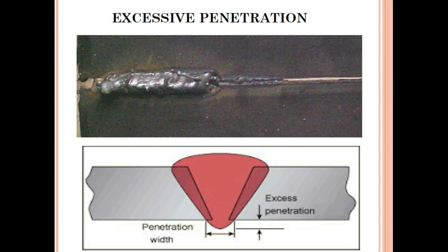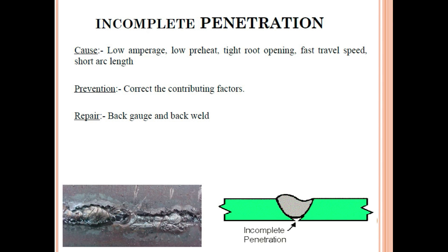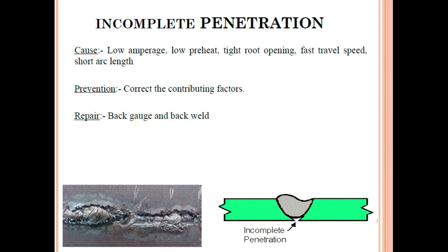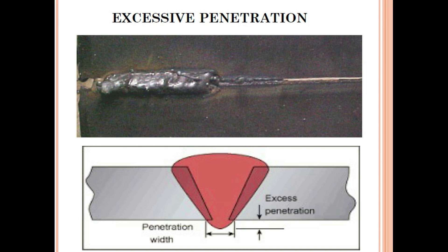Excessive penetration is the opposite problem. Causes include high amperage, high preheat, excessive root opening, and low travel speed. These are essentially the opposite of the causes for incomplete penetration. If amperage is too high or preheat is too high, excessive penetration will occur. Always use the proper parameters as per the WPS to avoid both incomplete and excessive penetration.